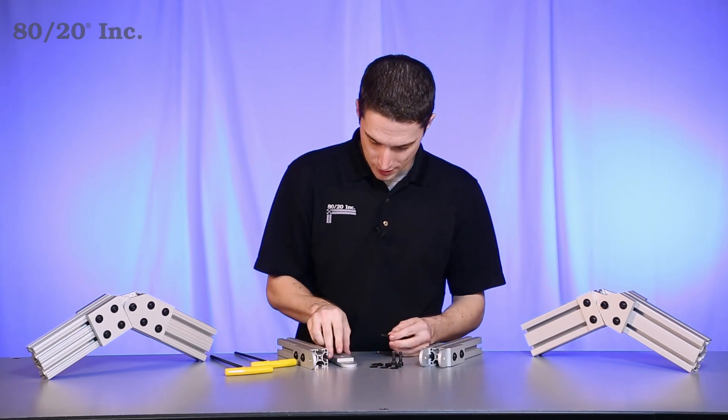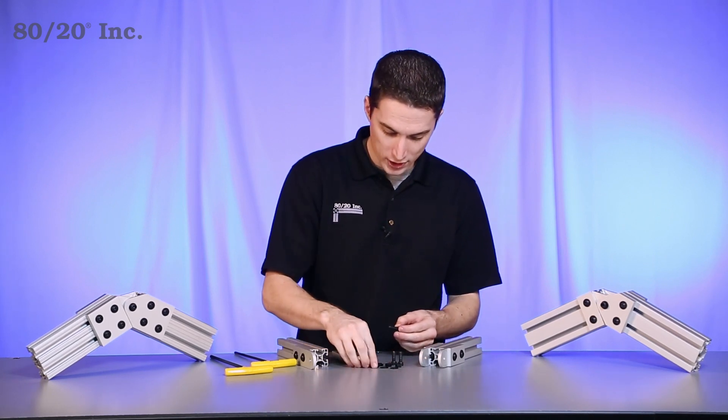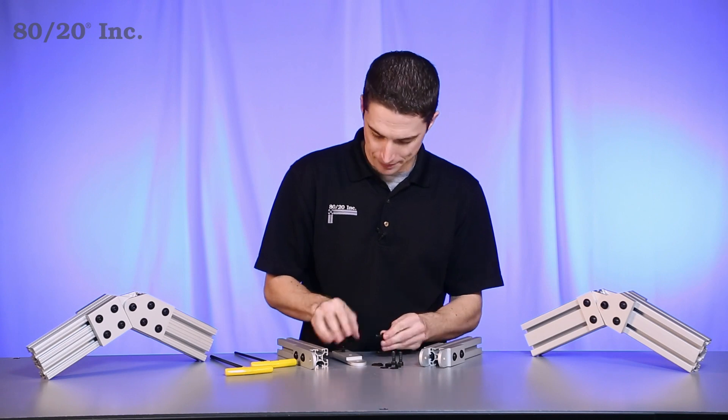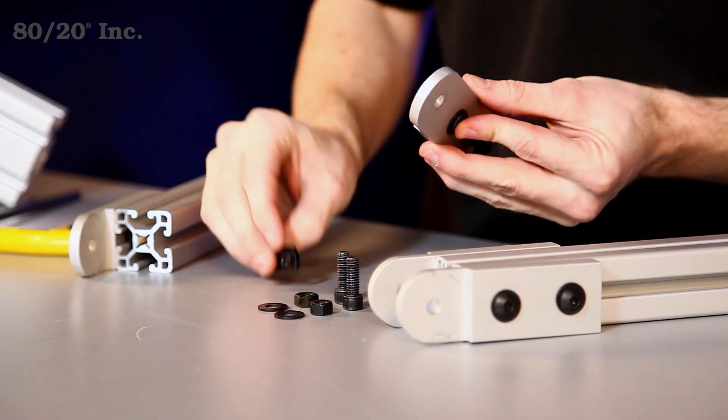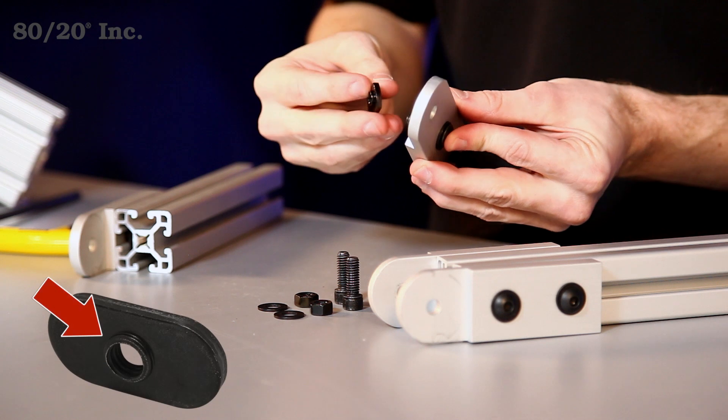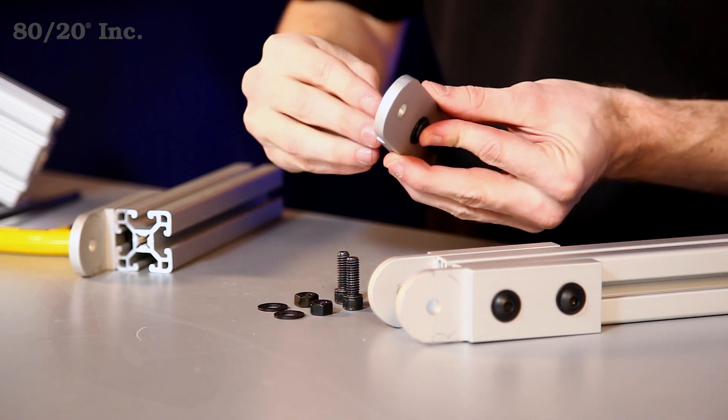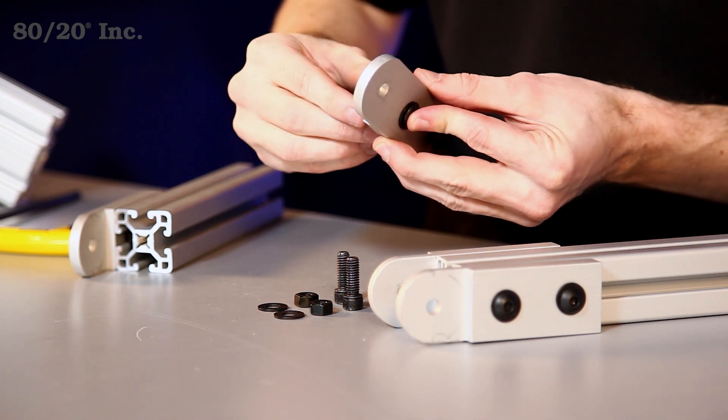To finish up, I'm going to put one last bolt and one last T-nut into this plate. It's important when you're using your T-nuts to have the pilot projection facing downwards or away from the plate. Get that preloaded on there.